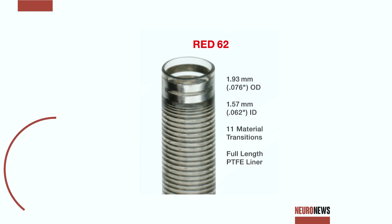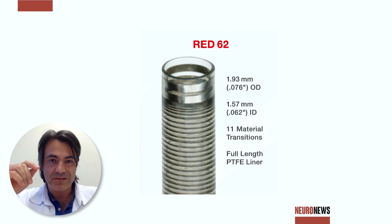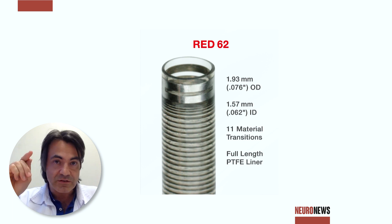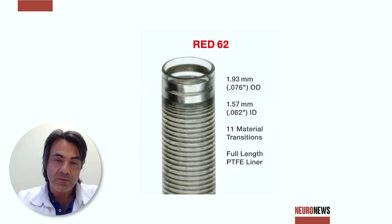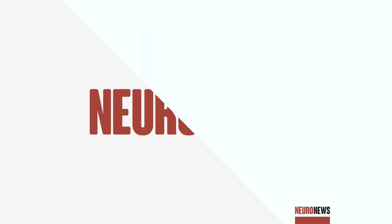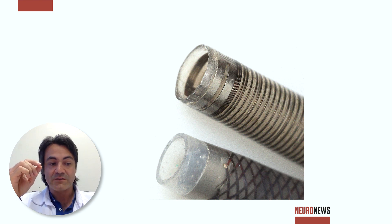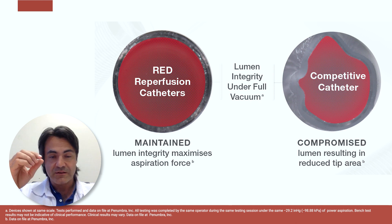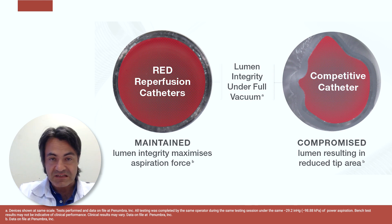What we see in the new RED family of Penumbra catheters is that they have metallic scaffolding going to the distal tip, so the soft portion remains very short. This reduces the tendency to collapse during aspiration and probably also improves the interaction with the stent retriever in combined thrombectomy. The distal tip's non-radiopaque portion is shorter, and so the tendency to collapse is absolutely lower — basically it does not collapse.